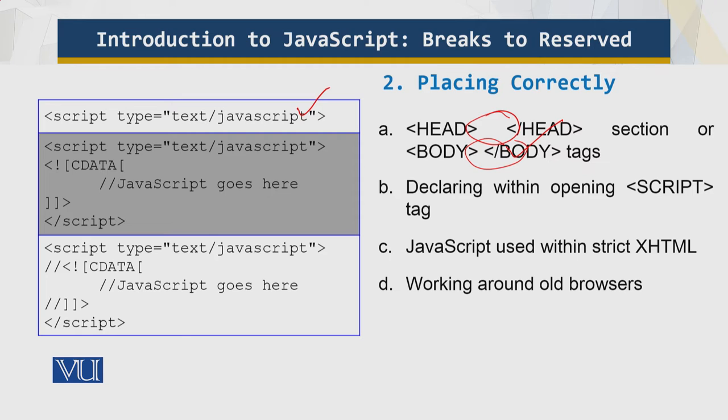One important issue noted: when you use JavaScript to render pages declared as extensible hypertext markup language, therefore JavaScript used within strict XHTML should be declared as follows like this. Older browsers might not parse the CDATA section correctly. So what to do? This problem can be worked around by placing the CDATA opening and closing lines within JavaScript comments like this. So use this approach working around the old browsers.